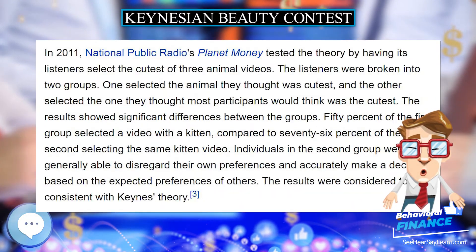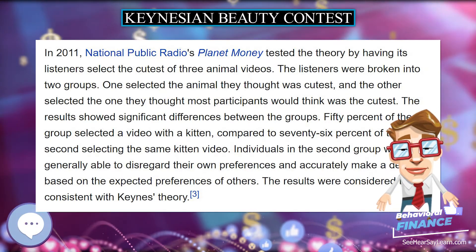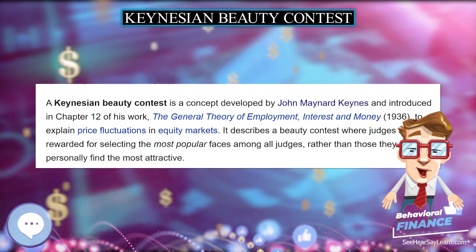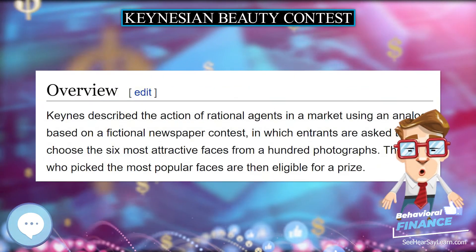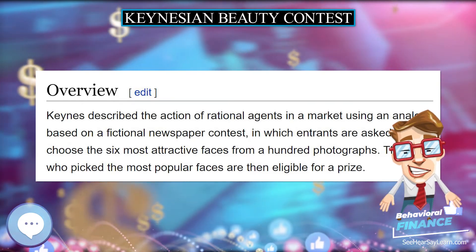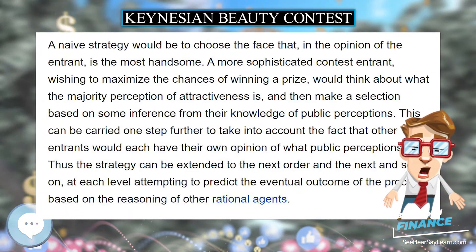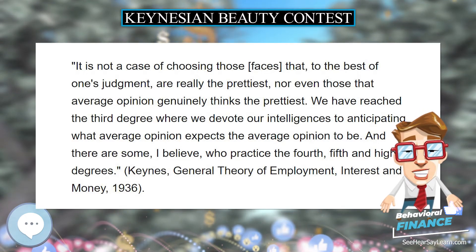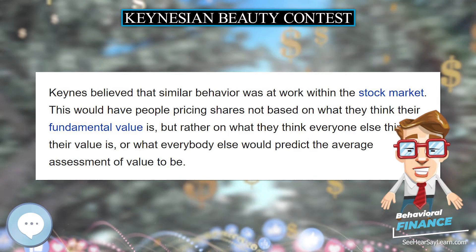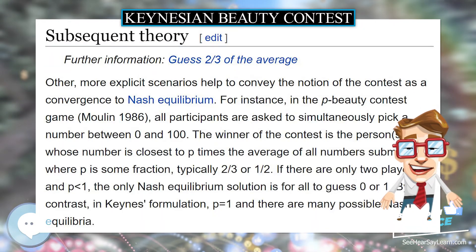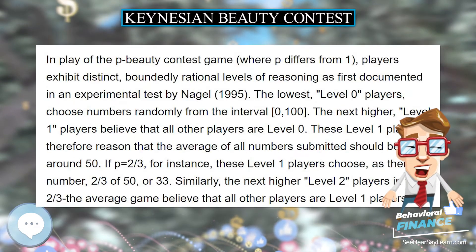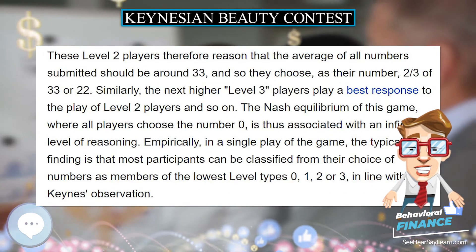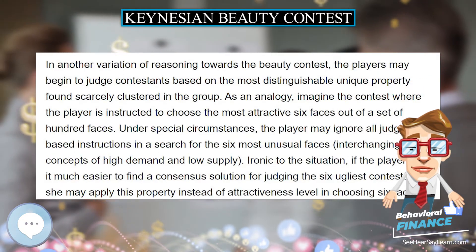In another variation of reasoning towards the beauty contest, the players may begin to judge contestants based on the most distinguishable unique property found scarcely clustered in the group. As an analogy, imagine the contest where the player is instructed to choose the most attractive 6 faces out of a set of 100 faces. Under special circumstances, the player may ignore all judgement-based instructions in a search for the 6 most unusual faces, interchanging concepts of high demand and low supply. If the player finds it much easier to find a consensus solution for judging the 6 ugliest contestants, she may apply this property instead of attractiveness level in choosing 6 faces. In this line of reasoning, the player is looking for other players overlooking the instructions, which can often be based on a random selection, to a transformed set of instructions only elite players would solicit, giving them an advantage.